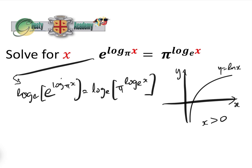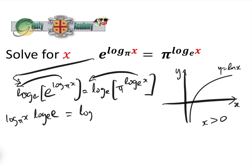Now we can bring these down out of the log, so that gives log_pi(x) times log_e(e) equals log_e(x) times log_e(pi). It's worth noting that e and pi are both constants, so log_e(pi) is also a constant.